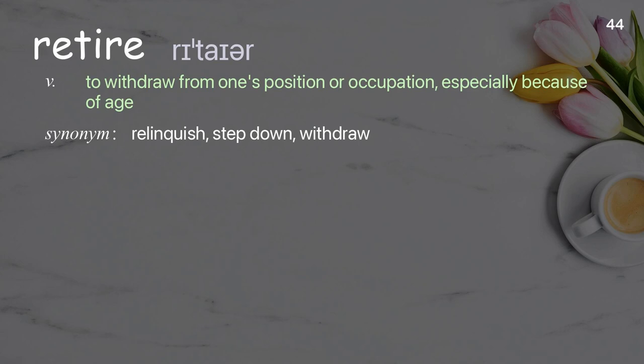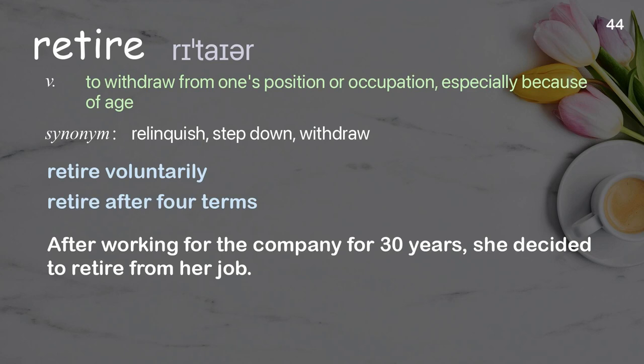Retire: to withdraw from one's position or occupation, especially because of age. Examples: retire voluntarily; retire after four terms. After working for the company for 30 years, she decided to retire from her job.